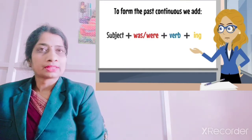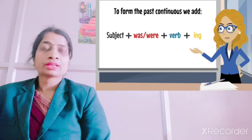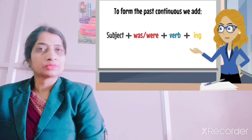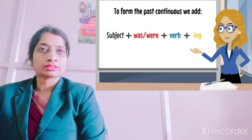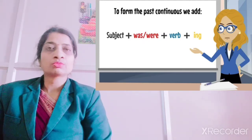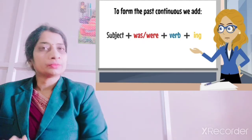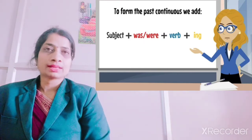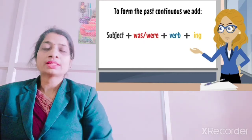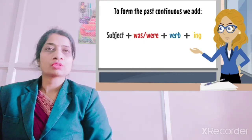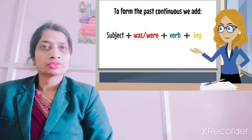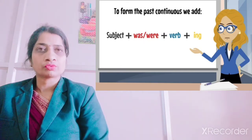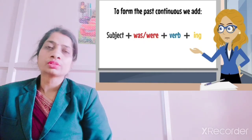Just like in present continuous, sabse pehle subject likhte hain, last mein object hota hai, beech mein verb ki ing form aati hai — aur is/am/are ki jagah hum likhte hain was or were. Either we use 'was' or we use 'were'.